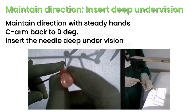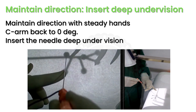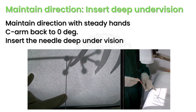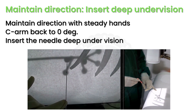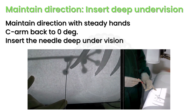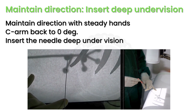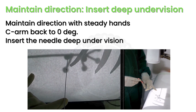In order to confirm the depth of penetration, rotate the C-arm back to zero degrees. Use zero-degree fluoroscopy to assess the depth of puncture and further insert the needle into the calyx. Confirm the puncture with free flow of urine.